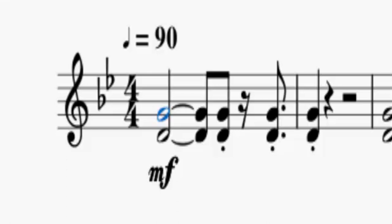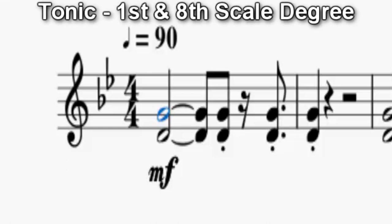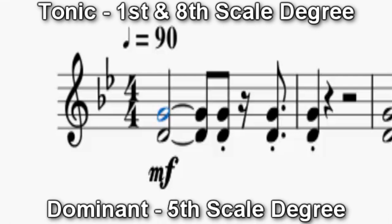The notes that create a perfect fourth are the tonic, which are the first and eighth scale degrees, and the dominant, which is the fifth scale degree, but it's just restructured so that the dominant is the lowest note.